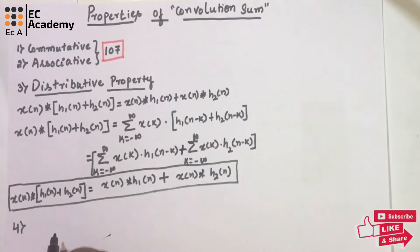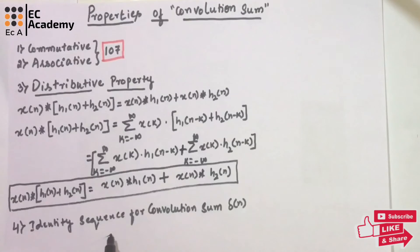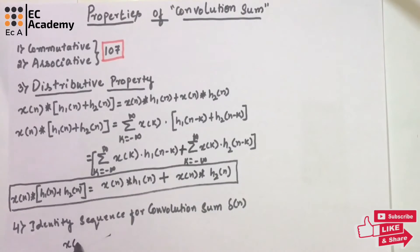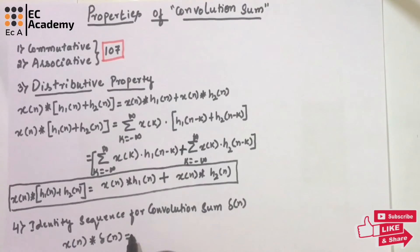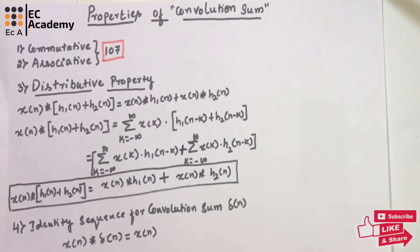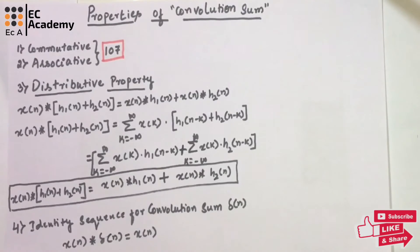The next property is the identity sequence. The identity sequence for convolution sum is delta(n). This means x(n) convoluted with delta(n) is equal to x(n) itself. So if you convolute any sequence with delta(n), you will get the same sequence back. This is the identity property of convolution sum.